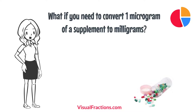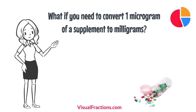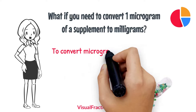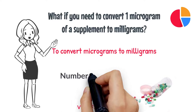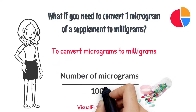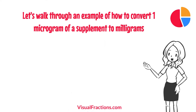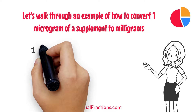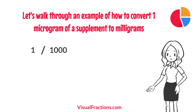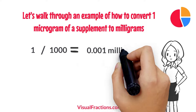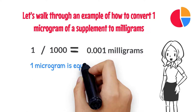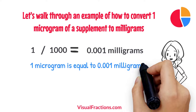But what if you need to convert 1 microgram of a supplement to milligrams? Don't worry, we've got you covered. To convert micrograms to milligrams, you need to divide the number of micrograms by 1000. Let's walk through an example: we start by dividing 1 by 1000. This gives us 0.001 milligrams. And that's it — 1 microgram is equal to 0.001 milligrams.